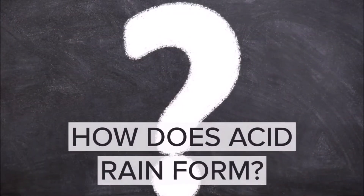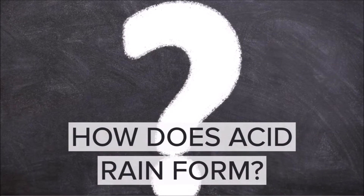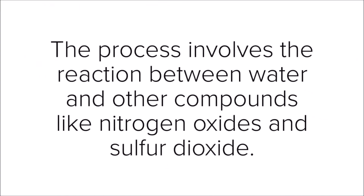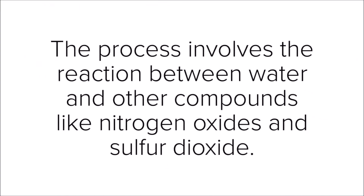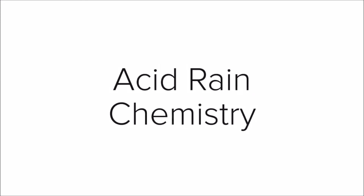How does acid rain form? Acid rain is formed through a complex chemical process that occurs naturally. The process involves the reaction between water and other compounds like nitrogen oxides and sulfur dioxide.